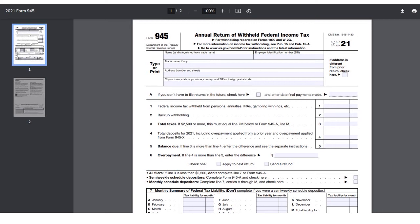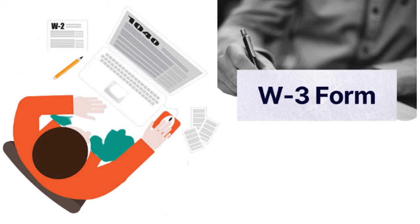Form 945 is a federal income tax return used to report non-payroll payments including pension distributions. Employers must also report withholding to employees and the Social Security Administration by filing Form W-2 with employees and Form W-3 — a transmittal form summarizing all W-2s — with the Social Security Administration. Copies of all W-2s are included with the W-3. Employers must file returns by set deadlines, usually electronically through an authorized e-file provider. Most employer returns are filed annually; however, Form 941 is filed quarterly.